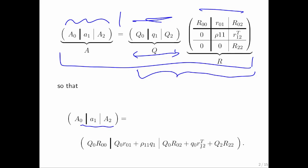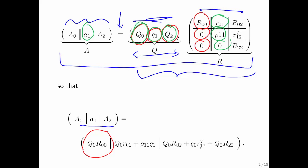What do you get? When you do partitioned matrix-matrix multiply, you get the Q0 times R00, plus Q1 times 0, plus Q2 times 0. So this part of the matrix is just Q0 times R00. If we now look at this second column, it equals Q0 times R01 plus Q1 times rho11 plus Q2 times 0.